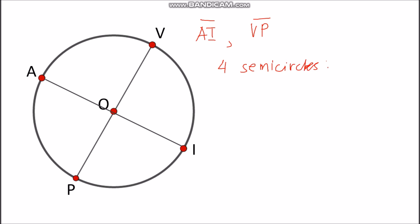Now let's start with segment VP. So you have arc VIP and arc VAP. Now with segment AI, there are again two semicircles here. So you have arc AVI and also arc API.